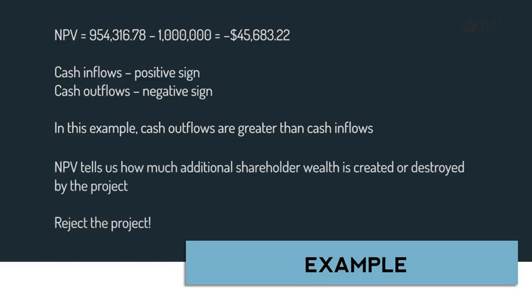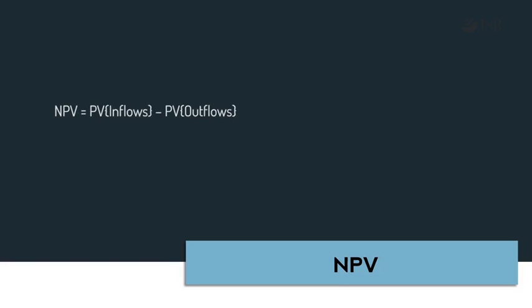The NPV specifically tells us how much additional shareholder wealth is created or destroyed by the project. Here, the negative NPV tells us that if the company accepts the project, shareholder wealth would reduce by $45,683.22. This is inconsistent with the manager's objective of maximizing shareholder wealth, and hence the project is rejected. A general formula for NPV is the present value of inflows minus the present value of outflows — inflows are benefits, outflows are costs.